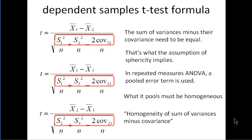The assumption of sphericity is almost inexplicable just from looking at the word, but if you say something like homogeneity of sum of variances minus covariance, I think that makes sense. That's actually what has to be equal for sphericity to be satisfied.